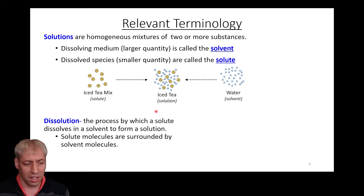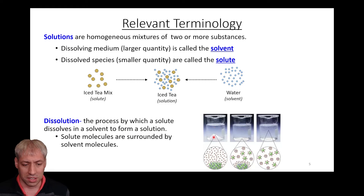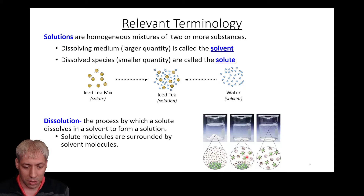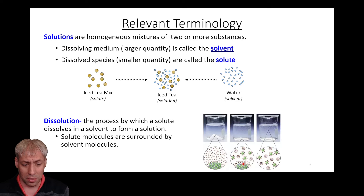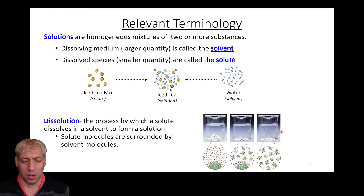Dissolution is effectively the process by which a solution forms. You start out with water, put the iced tea mix in, and the process of it dissolving is known as dissolution. In the liquid state — and even in the solid state — it ends up being the solute surrounded by the solvent molecules. Here's an example showing sodium chloride crystals dissolving in water: it starts as a NaCl solid, then dissolves. You see ion-dipole interactions where the Na⁺ and Cl⁻ ions get surrounded by the water molecules, and eventually the solid completely disappears, forming a homogeneous solution.